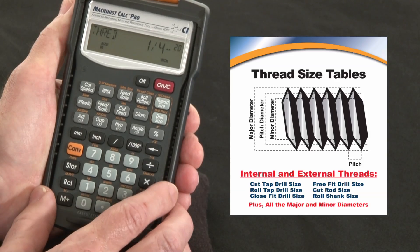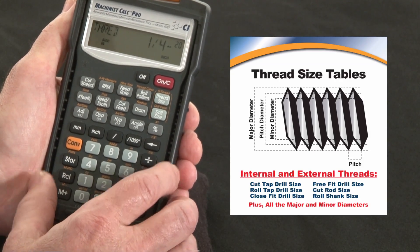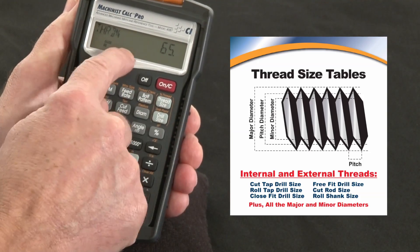Now this is based on a 75% thread engagement, which is the default of the calculator, but if you have a material you want to use something different, let's say we want to go 65%. 65, convert, percent thread. Now that's stored at 65%.